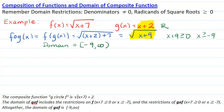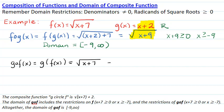The composite function g circle f of x will be g of f of x, so f of x goes into g. That gives the square root of x plus 7, plus 2. The domain of this function must include the restriction of f of x. Since f of x was the square root of x plus 7, it has a square root radicand with the restriction that x plus 7 must be greater than or equal to 0, or x must be greater than or equal to negative 7.